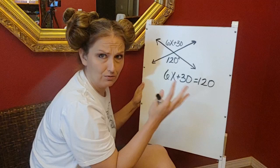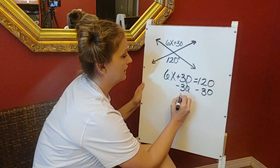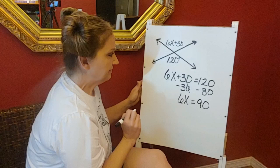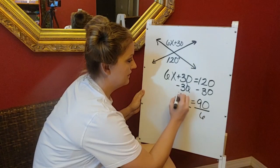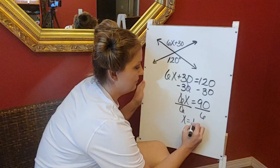So now I have a two-step equation once I set these equal. So I can subtract 30 from both sides and I'm left with 6x equals 90. And then I can divide by 6 to find out what x is. Now if you don't want to worry with doing that in your head, you can take out your calculator and do 90 divided by 6 and x ends up being 15.